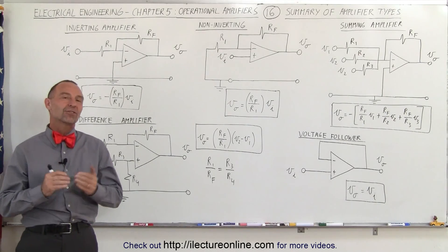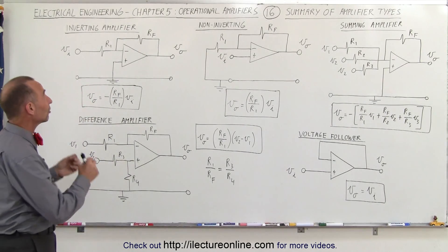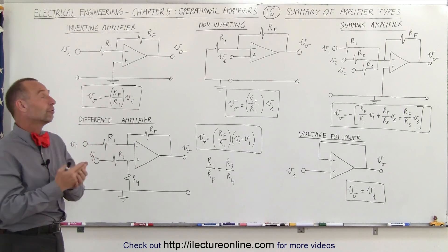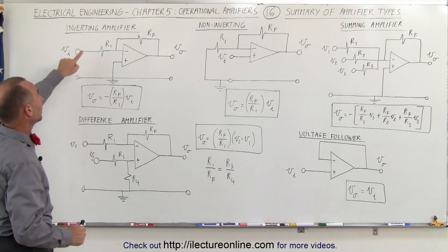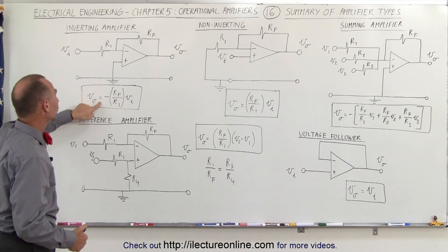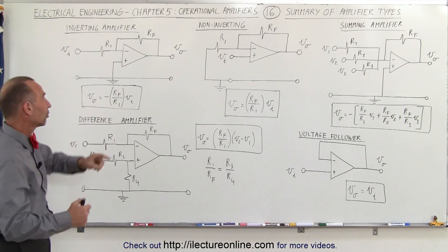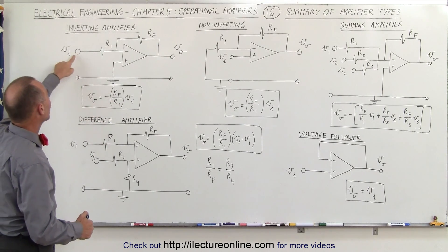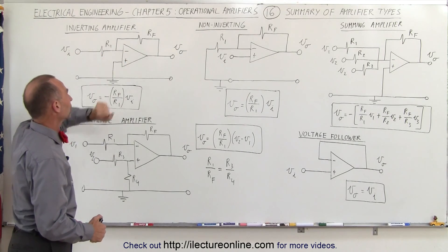Welcome to our lecture online. Let's summarize the different ways in which we can use operational amplifiers. For example, we can have an inverting amplifier, where the output voltage is going to be the negative of the input voltage times the ratio of the feedback resistor divided by the resistor between the input voltage and the inverting terminal.